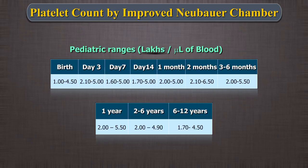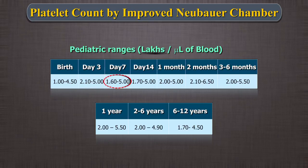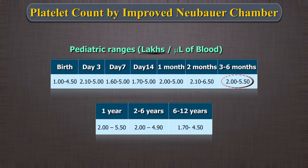It is very important to have age-specific biological reference ranges defined on the report formats. The pediatric ranges are: 1 year: 2.0–5.50; 2–6 years: 2.0–4.90; 6–12 years: 1.70–4.50; Birth: 1.0–4.50; Day 3: 2.10–5.0; Day 7: 1.60–5.0; Day 14: 1.70–5.0; 1 month: 2.0–5.0; 2 months: 2.10–6.50; 3–6 months: 2.0–5.50.